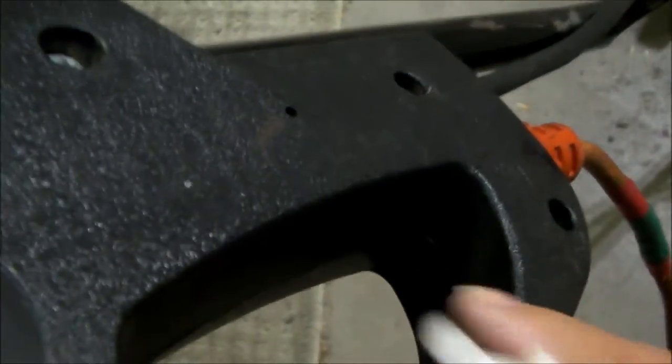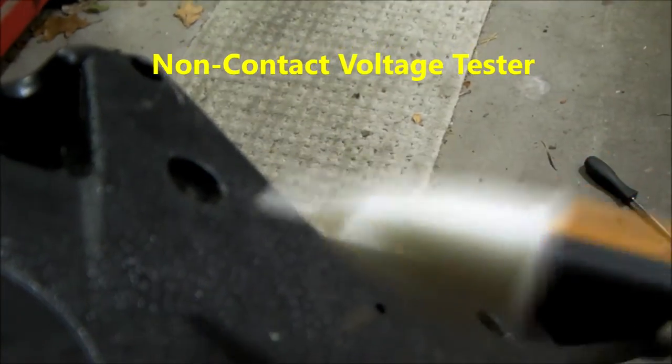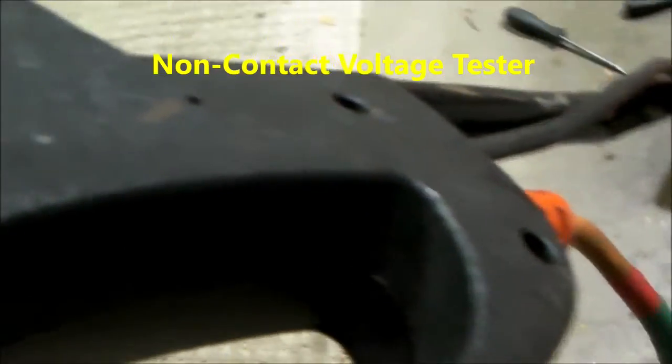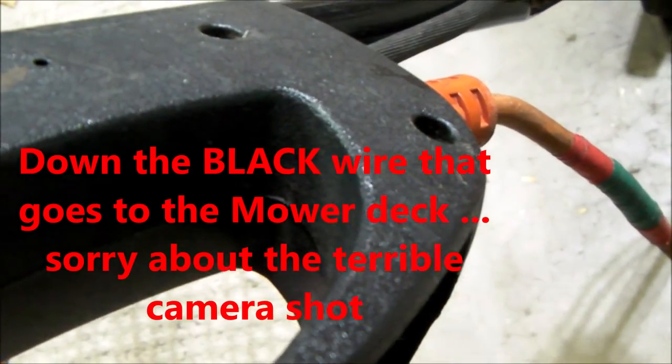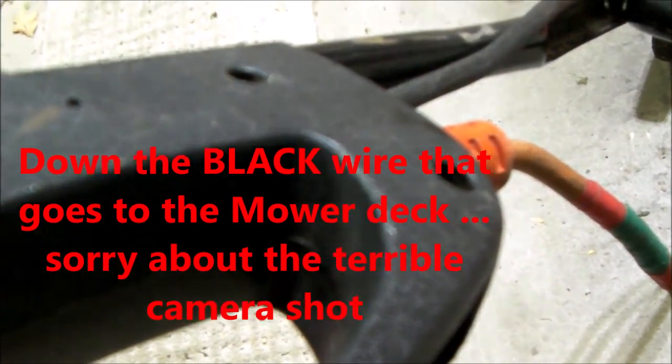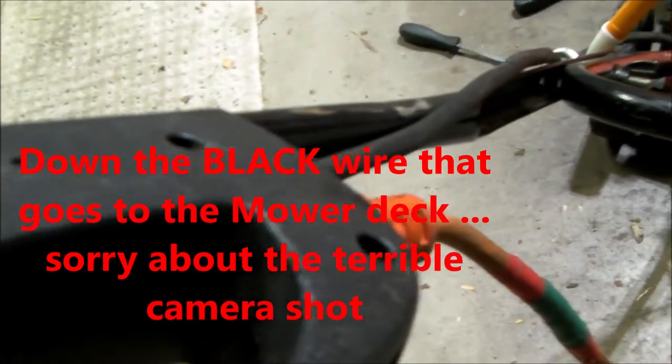So let me just show you the easy way to figure out whether it's a switch or not. Put your extension cord in, pull the on handle, and if you've got one of these voltage proximity testers, I got the handle pulled on. I just run my tester down the wire. That tells me that there's power on the wire. If I let the handle go, there's no power. So that tells me that there's power getting to the mower.